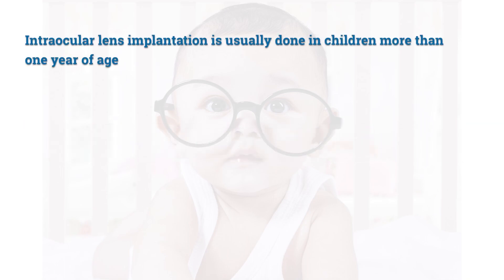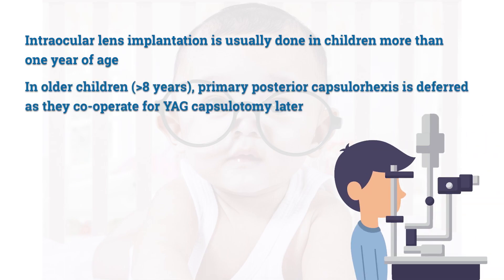Intraocular lens implantation is usually done in children more than 1 year of age. In children more than 8 years of age, primary posterior capsulorexis is deferred as they cooperate for YAG capsulotomy later.